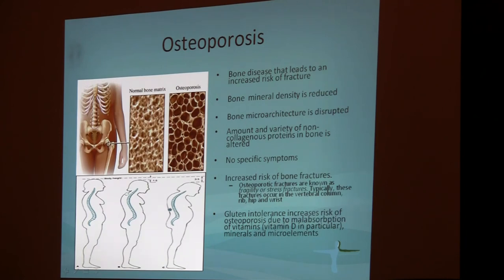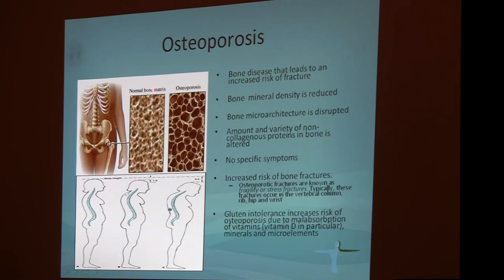We won't go into much detail about osteoporosis since we all know what it is. The key point is that in women with osteoporosis, checking for gluten intolerance should be a must, because it can make a huge difference. Osteoporosis is a disease of low bone density and calcium loss in trabecular bones. The disease is preventable with the right diet and completely treatable with the right medications.